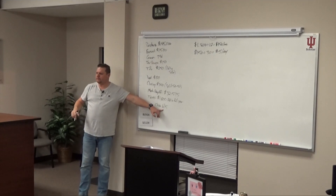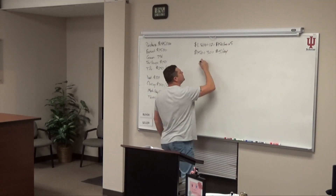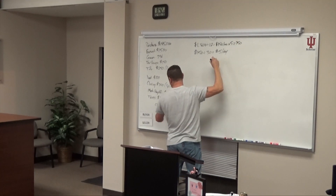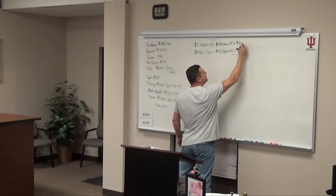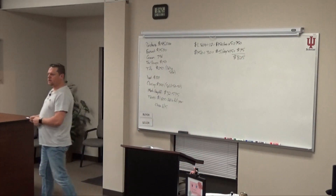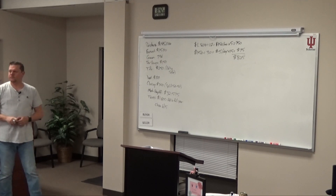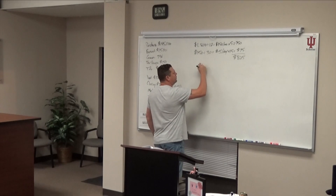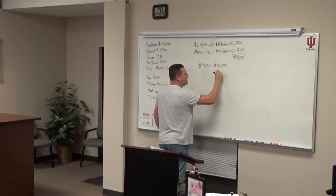We're closing on June 15th, so there are five months, which makes that $750. Fifteen days in June equals $75. Adding those together is $825. That covers the first half of the year — we're concerned about the second half of the year. So I need to take $1,800 minus $825, and I get $975.